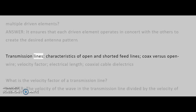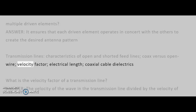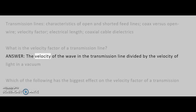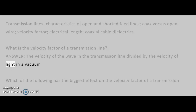Transmission Lines: Characteristics of open and shorted feed lines, coax vs. open wire, velocity factor, electrical length, coaxial cable dielectrics. What is the velocity factor of a transmission line?